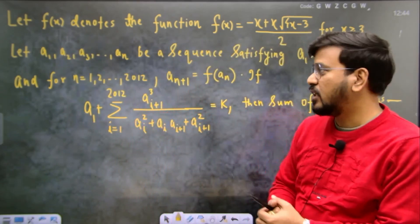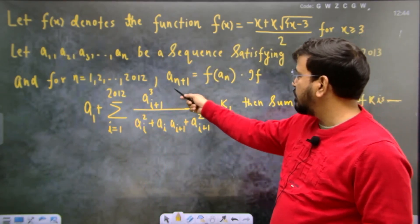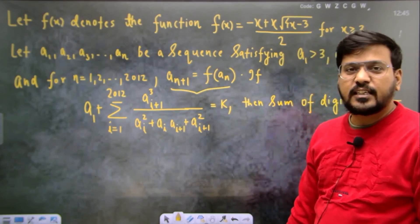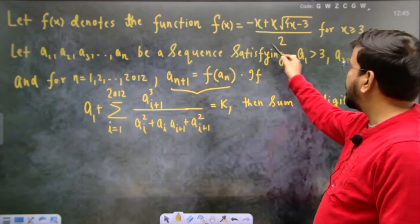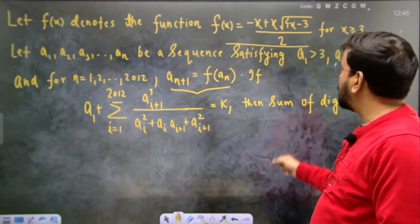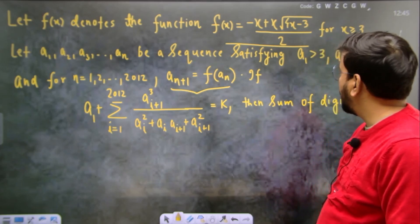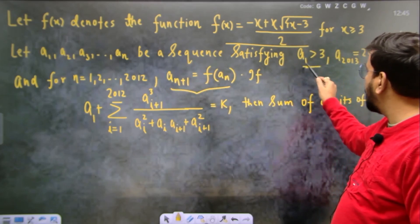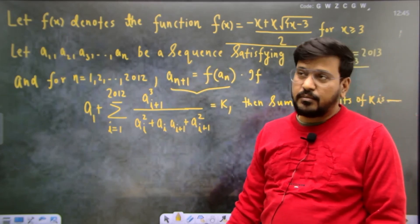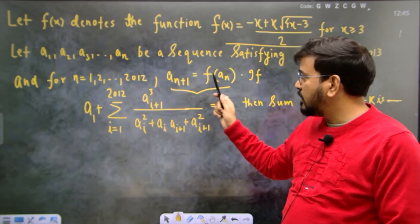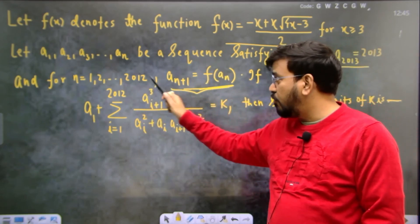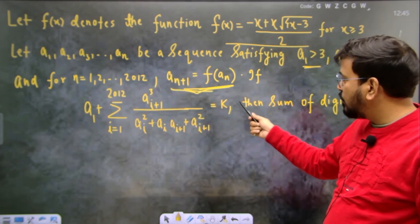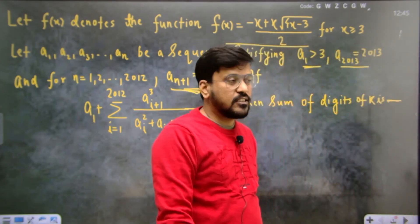On one side you have a function, a functional relation, and a recursion has also been given. Recursion-based things are often asked in your examination, whether you talk about JEE Main or JEE Advanced. f(x) is a function denoted as: minus x plus x into root under (4x minus 3), upon 2. The sequence a1 to an is given, satisfying a1 is greater than 3, a2013 is greater than 3, and for n equal to 1 to 2012, this relation holds. If this equals k, then the sum of the digits of k is?